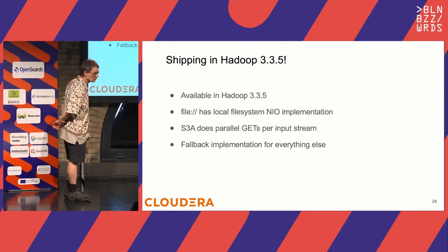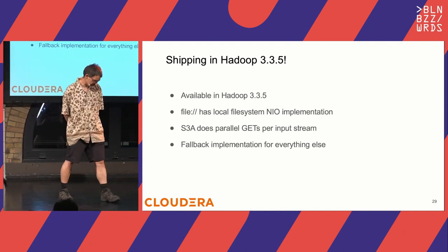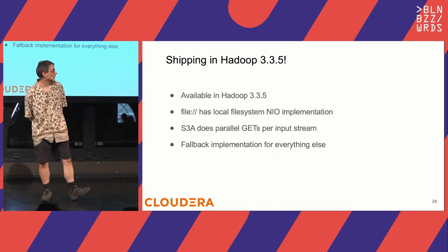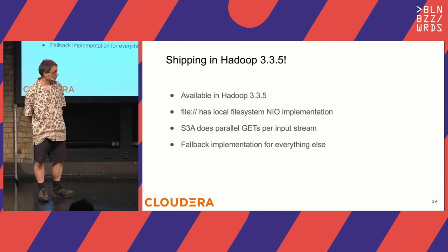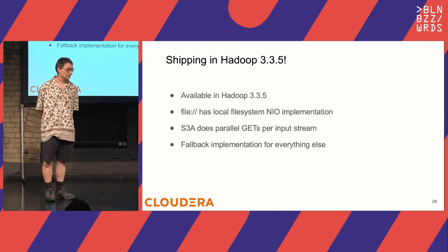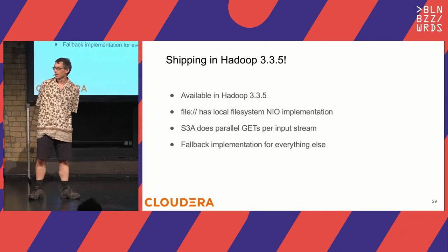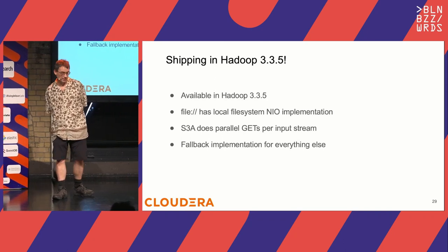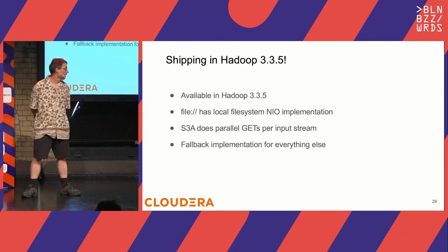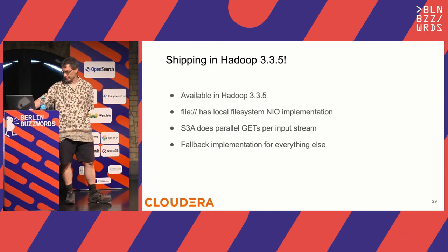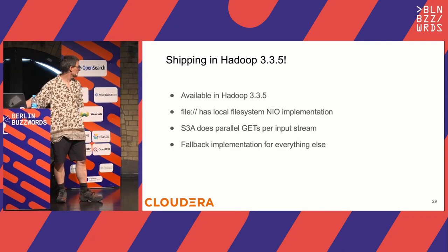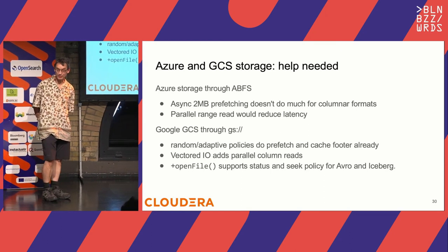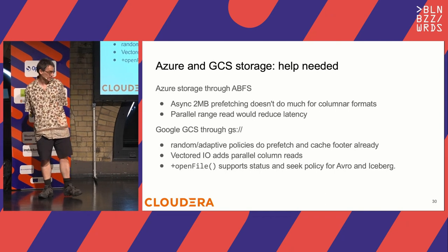And it is shipping. If you go to hadoop.apache.org and download the latest build — 3.3.5 — you get this API. We're going to release 3.3.6, and there are no bug fixes to this code yet, which is nice. You get the local file system implementation and the S3A one. We do not yet have anything for Azure ABFS or GCS with the same speedup, which is a shame. If anybody works in that area and wants to get their code faster, this would be a really good way to do it.